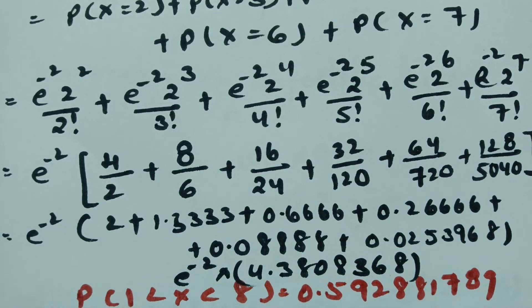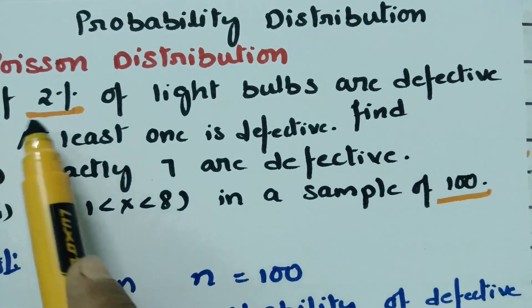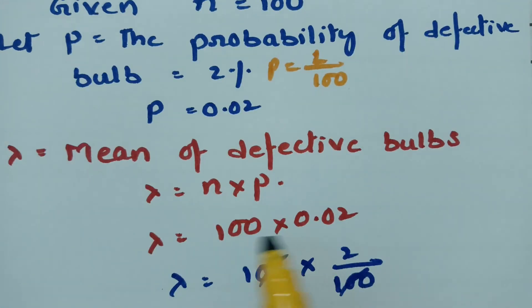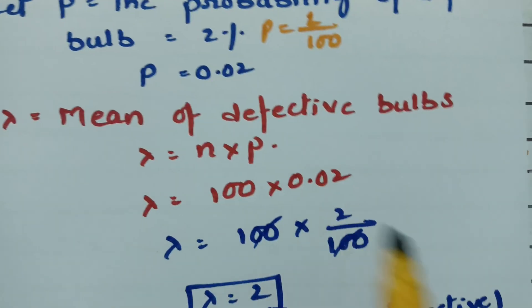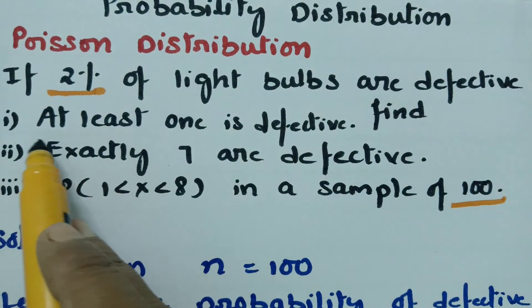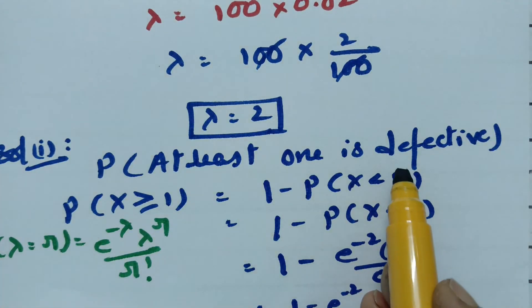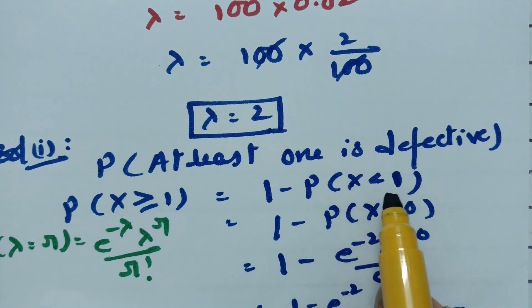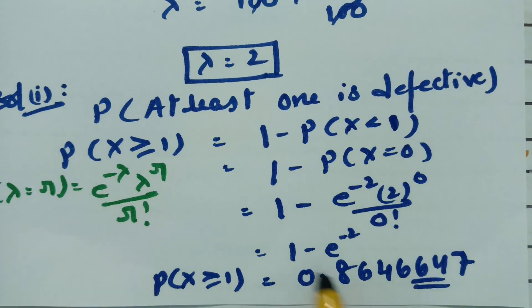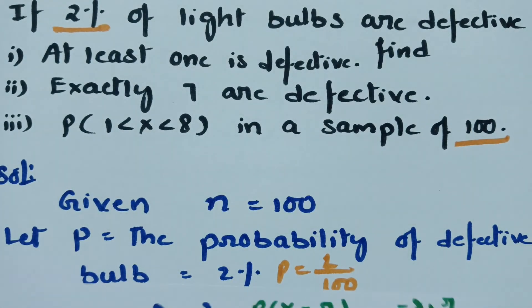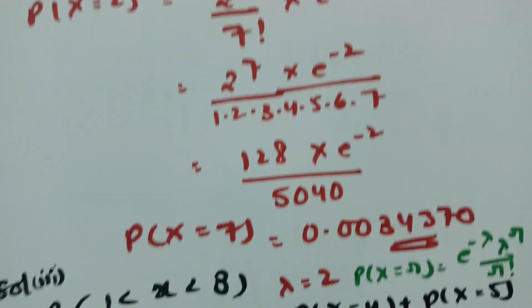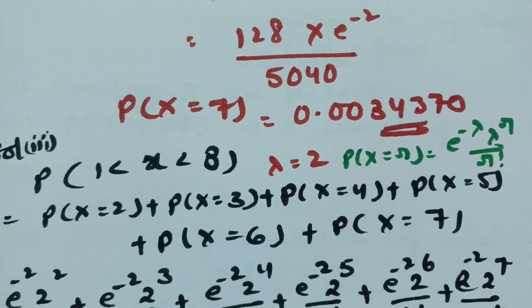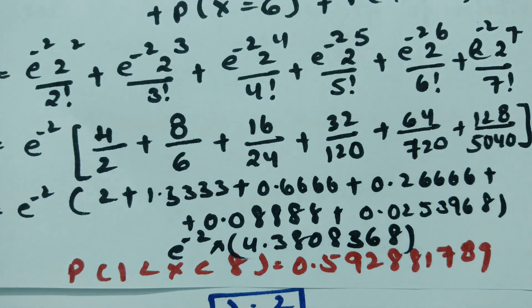Thank you for watching. To recap: p is given as 2% and n is 100, so p=0.02 and n=100. Lambda equals n into p, giving lambda=2. For at least one defective, we use 1 minus P(X=0), giving 0.8646647. For exactly 7, r=7 gives 0.0034370. For probability of 1 less than x less than 8, using the formula gives 0.592288178. Please practice and you can solve these by yourself. Pass it on to your friends if you really like this video.